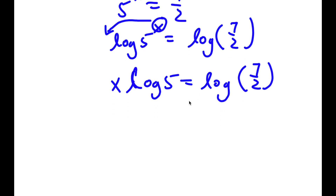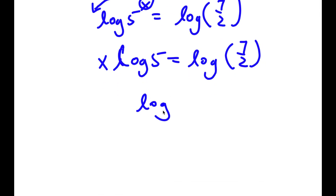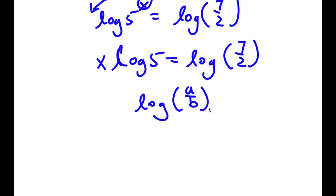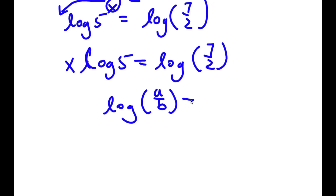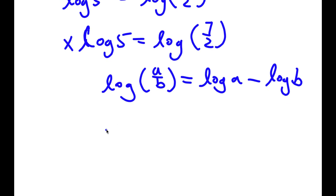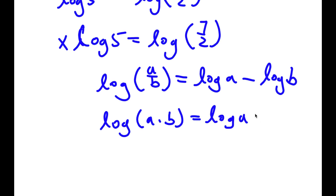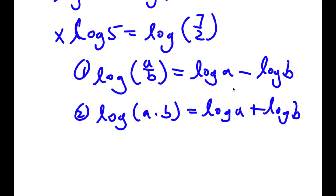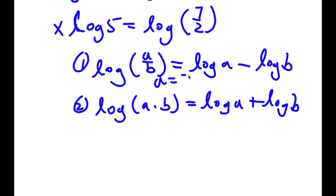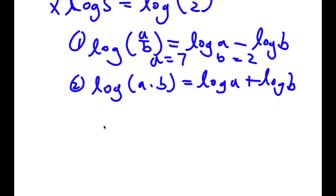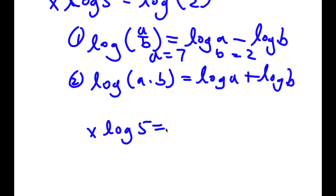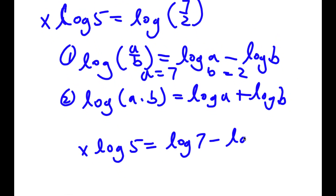Now, another important property of logarithms: if I have something in the form log a over b, this is equal to log a minus log b. Also, if I had something in the form log a times b, this would equal log a plus log b. In this case we're going to use the first property — log a minus log b — where a equals 7 and b equals 2. So now I have x times log 5 is equal to log 7 minus log 2.